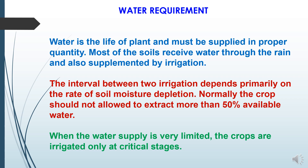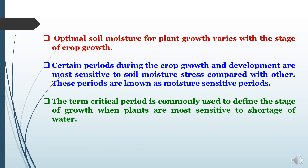When the water supply is very limited, crops are irrigated only at critical stages. Optimal soil moisture for plant growth varies with the stages of crop growth. Certain periods during crop growth and development are most sensitive to soil moisture stress compared with other stages. These periods are known as moisture sensitive periods. The term critical period is commonly used to define the stage of growth when plants are more sensitive to shortage of water.